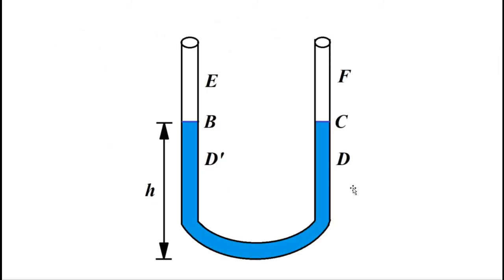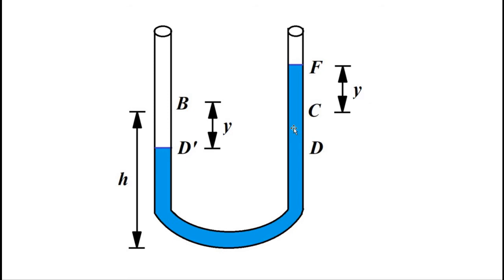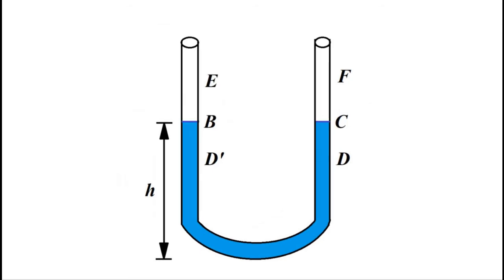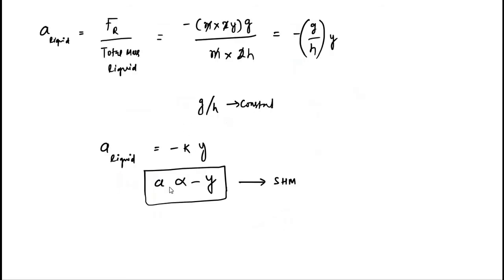So how does the SHM motion look? Starting from the initial equilibrium position, the liquid in the right limb is pushed down by margin y, causing a corresponding rise in the left limb. The restoring force then brings it back to equilibrium at B, then to D', followed by a rise in the right limb by factor y as shown. This continues — equilibrium, displacement, restoring force — repeating on and on, driven by the restoring force acting downwards.